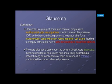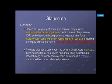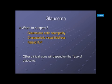Glaucoma is defined as a group of acute and chronic progressive multifactorial optic neuropathies in which intraocular pressure and other contributing factors are responsible for a characteristic acquired loss of retinal ganglion cell axons, leading to atrophy of the optic nerve with demonstrable visual field loss. We suspect glaucoma if there is glaucomatous optic neuropathy with characteristic visual field loss, or raised intraocular pressure.